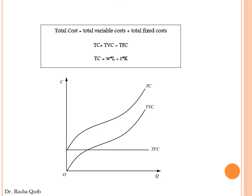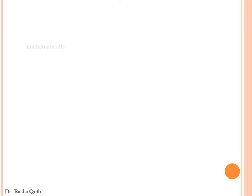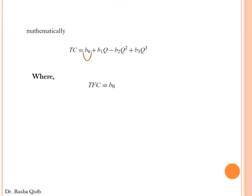We notice that the vertical distance between the total cost and total variable cost curves is constant, because it reflects the total fixed cost, which is fixed or constant whatever the level of output is. Mathematically, the total cost function can be represented where the intercept reflects the total fixed cost and the total variable cost is represented by a cubic polynomial form.